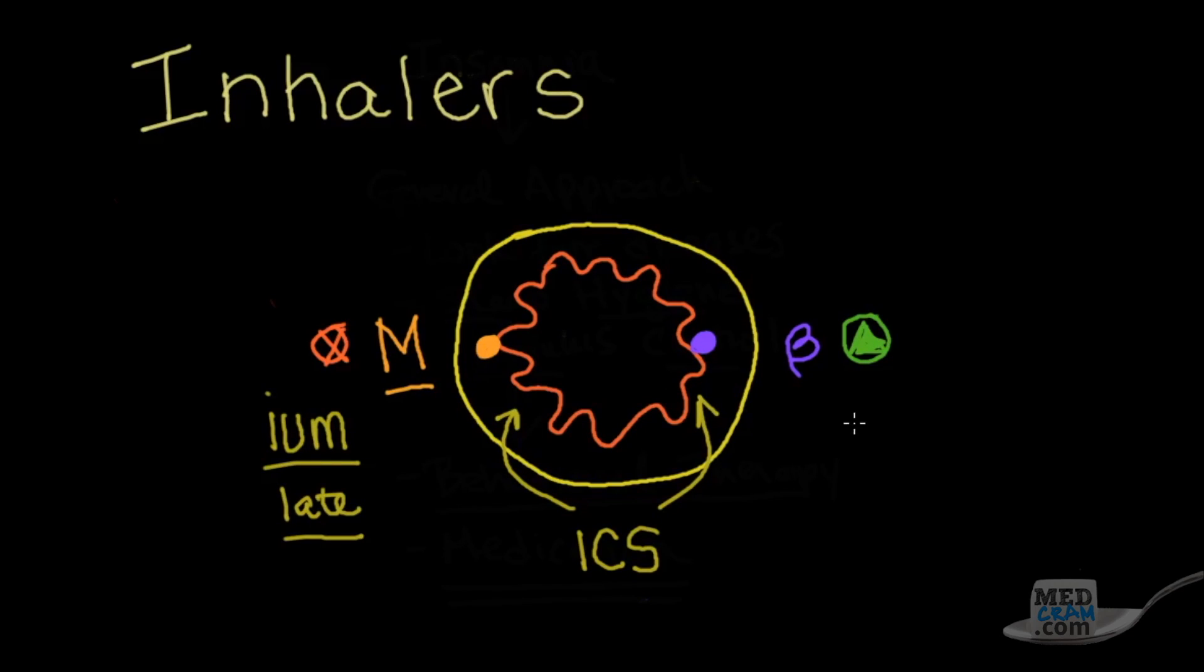Now on the beta agonist side, all of these end in O-L. So you'll know formoterol, salmeterol, albuterol. All those things end in O-L. Now how do you know whether it's an inhaled corticosteroid? You'll know that because it ends in O-N-E or O-N, like fluticasone, mometasone, etc.